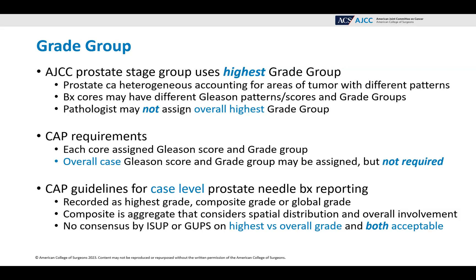The CAP guidelines for case-level prostate needle biopsy reporting allow it to be recorded as the highest grade, composite grade, or global grade. Composite is an aggregate that considers the spatial distribution and overall involvement. There is no consensus by the major pathology groups ISUP or GUPS on whether the highest versus the overall grade is correct — both are acceptable. So be careful: if the pathologist gives an overall grade group for the entire tumor, look at all of them to determine whether it is the highest or the composite grade, because what we need for staging is the highest.